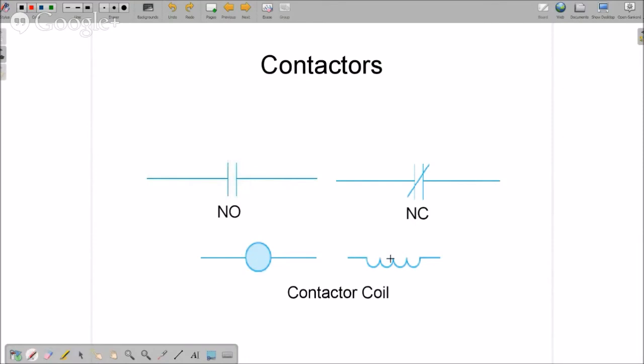Contactor coils - there could be three different symbols. You have to look at your legend to find out what they are. Then there's the contacts: normally open contacts and normally closed contacts. This is how it is diagrammed on your schematics when there is no power applied to the coil and it's at rest.